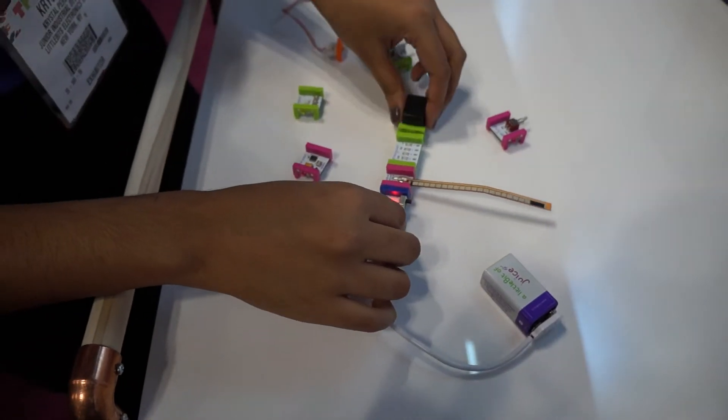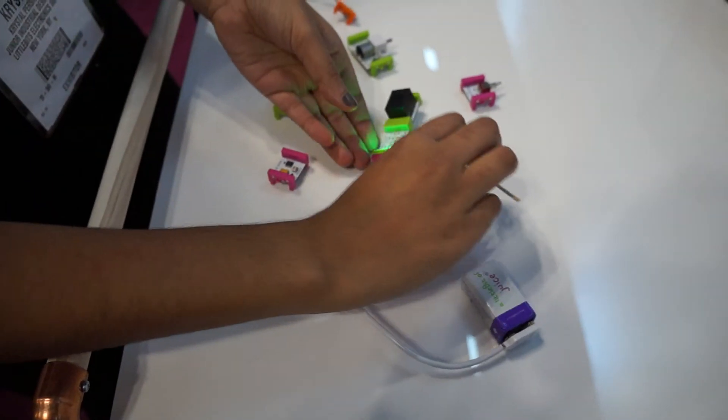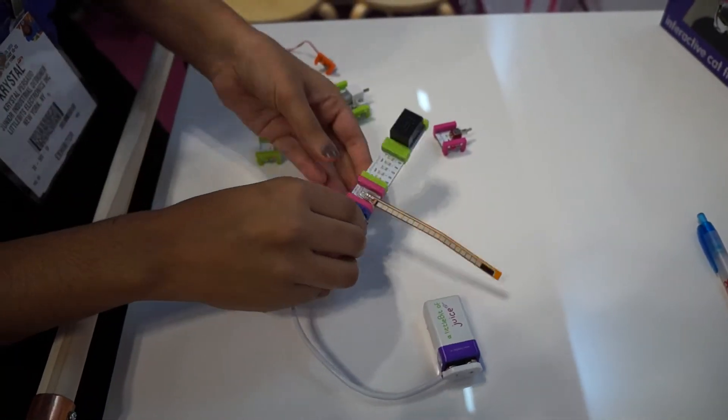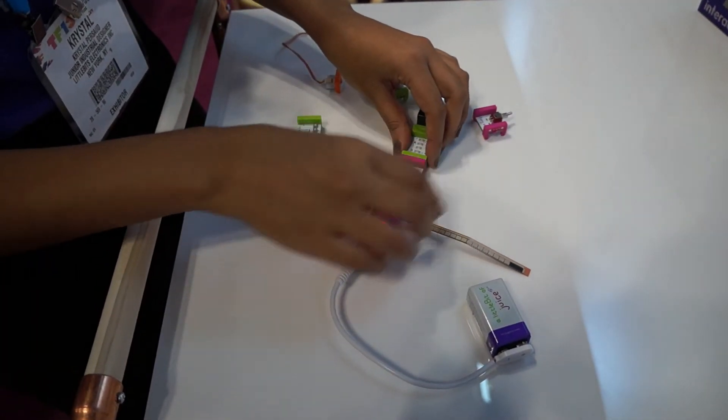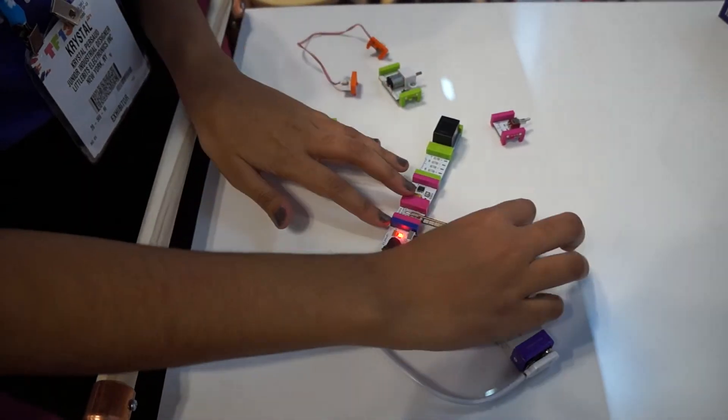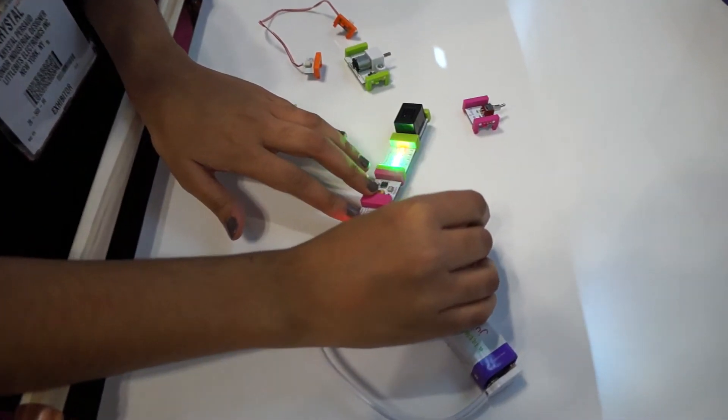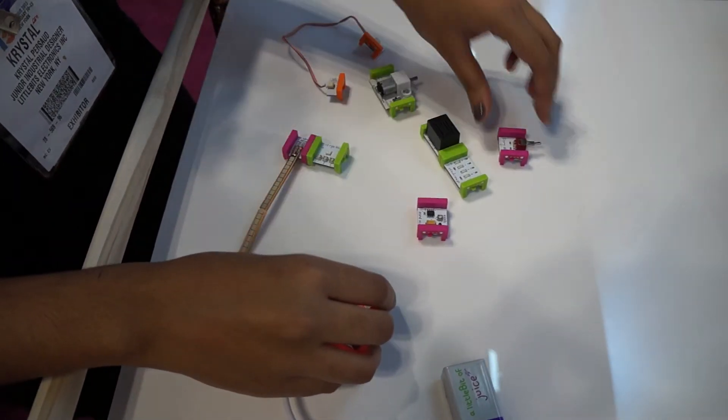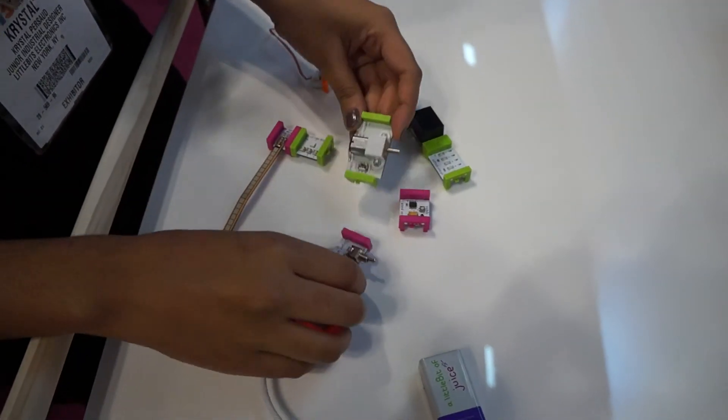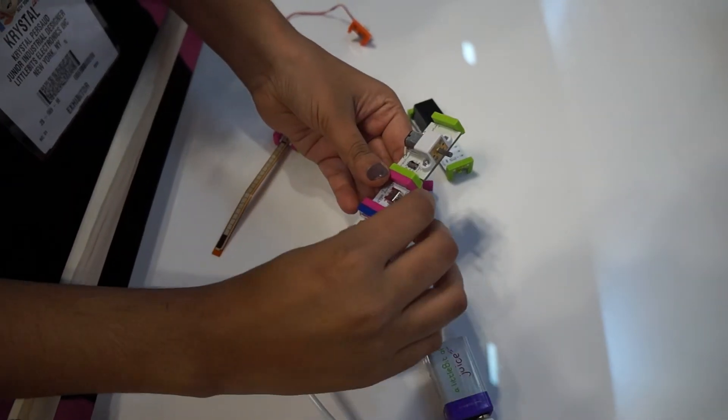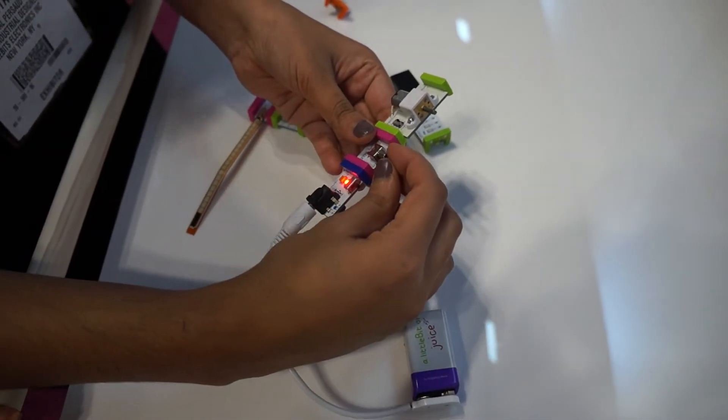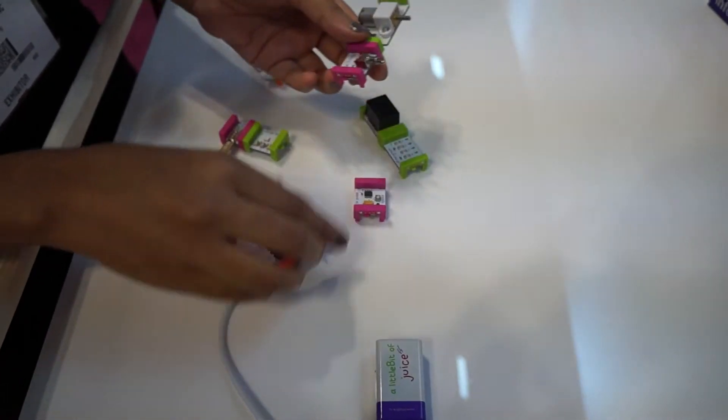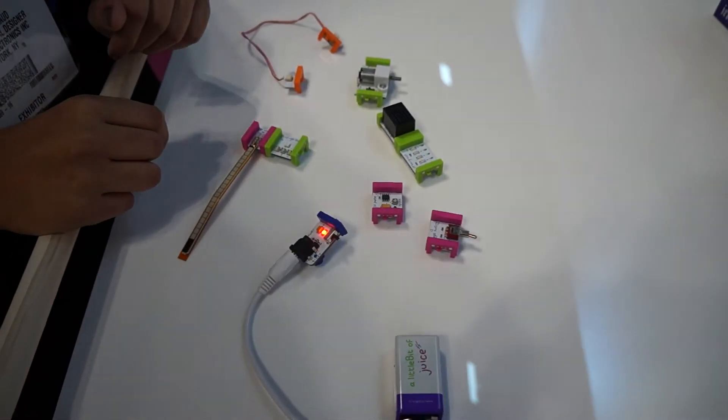And the more bits that you add the more complicated circuits you can make. So now you can almost make music with the buzzer. You can make it pulse. This one's cool. This is a little toggle switch that you can turn on and off, kind of like a light switch.